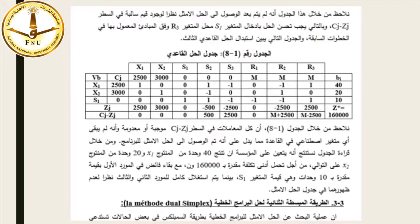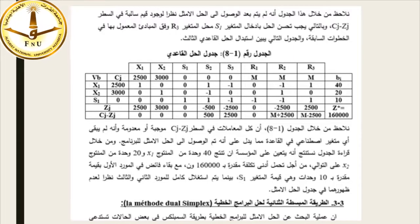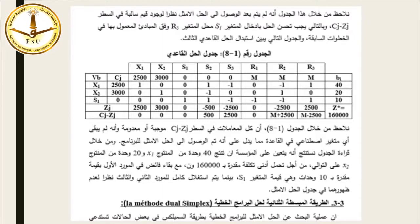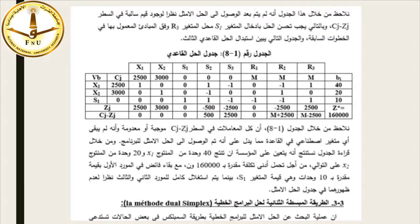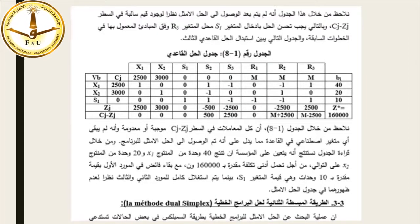وبالتالي يجب تحسين الحل بإدخال المتغير S1 محل المتغير R3 وفق المبادئ المعمول بها. نلاحظ من خلال الجدول الأخير أن كل المعاملات في السطر Cj-Zj موجبة أو معدومة وأنه لم يبقَ أي متغير اصطناعي في القاعدة، مما يدل على أنه تم الوصول إلى الحل الأمثل. تنتج المؤسسة 40 وحدة من X1 و20 وحدة من X2 بأدنى تكلفة مقدارها 160 ألف، مع فائض 10 وحدات في الموارد الأولى.